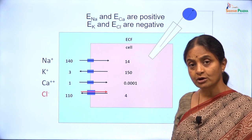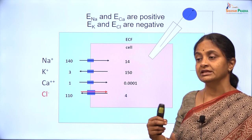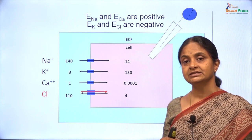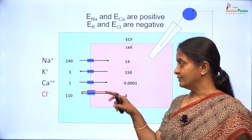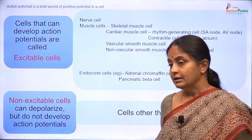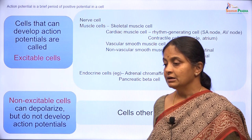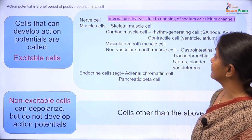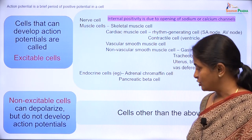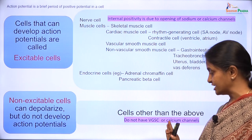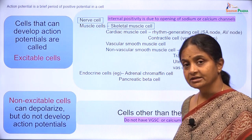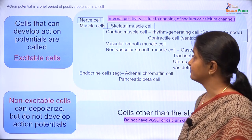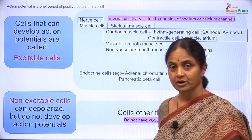If action potential is a brief period of internal positivity and ion channels contribute to that, then it is logical to assume that an action potential can develop either due to sodium channels opening or calcium channels opening. In the discussion thus far on action potentials, we have not referred to calcium channels — we have restricted ourselves to considering the upstroke as due to voltage gated sodium channels, but that is only in the neuron and skeletal muscles. Dr. Anand Bhaskar, when he considers cardiac muscle action potential, will tell you that they are indeed calcium action potentials.